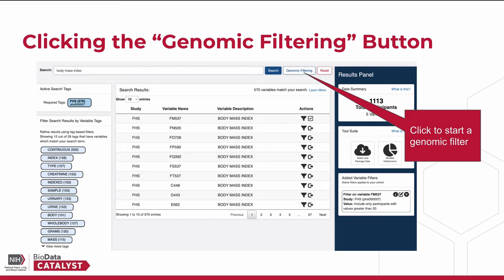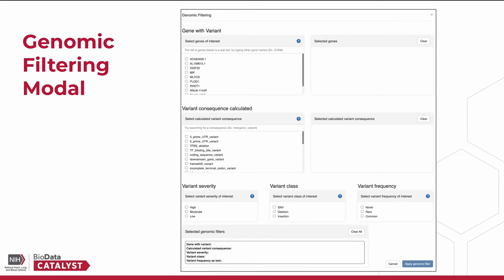To start a genomic filter, we can click the Genomic Filtering button next to the search bar. When this button is clicked, the screen will display the genomic filtering modal as shown here. Please note that to apply a genomic filter, you must select at least one gene with variant.